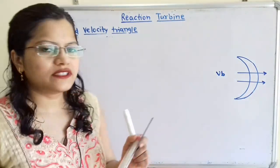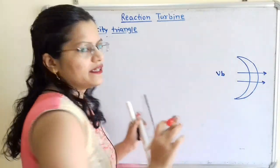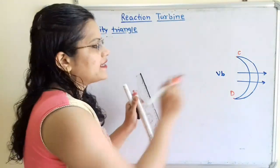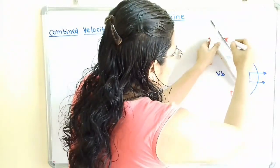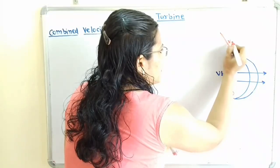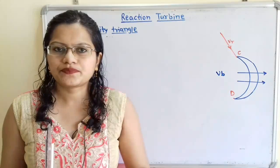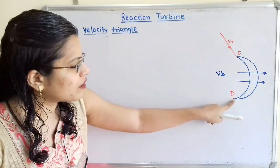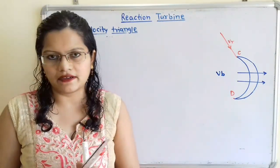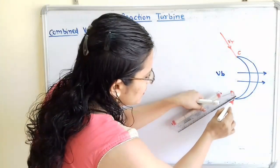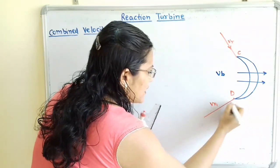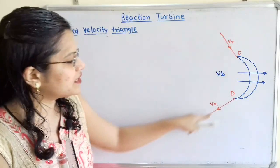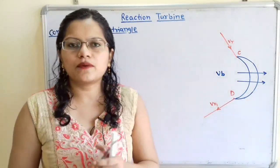Steam moves from the guide blade to the runner blade such that the relative velocity at the inlet tip — point C — is tangential to the blade angle, which is the inlet tip blade angle. Similarly, the relative velocity VR1 at the outlet tip — point D — must also be tangential to the blade angle. This is the condition for shockless entry and exit of steam.